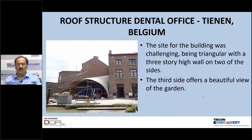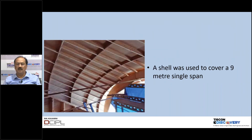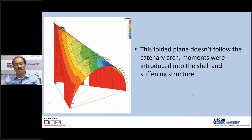A small structure that could not be classified as regular was built because site conditions demanded it — one triangular side had a good view that couldn't be blocked. A shell-type roof with a nine-meter span was designed using wooden mullions. You can see the stress contour diagrams — though it doesn't follow a particular arch, it was modeled as a shell structure and analyzed. The stress contours show a definite pattern to the load distribution.